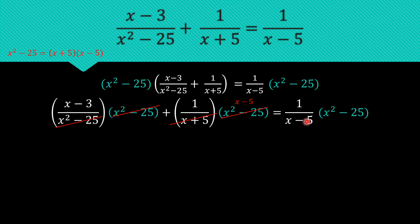The same goes with x minus 5. We can cancel that and what we have left is x plus 5.